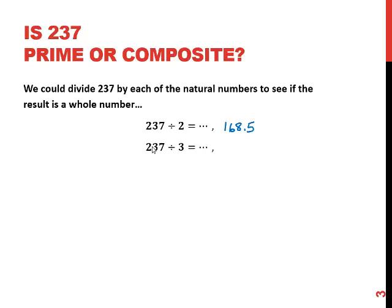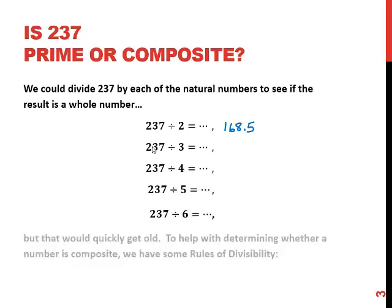We could check 3 and 4 and 5 and we could go through, but that's going to get old very quickly. So to help us with determining whether a number is composite or in determining whether or not different numbers are factors of other numbers, we have some rules of divisibility.